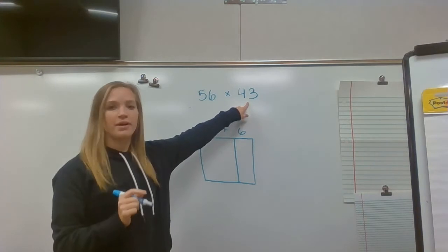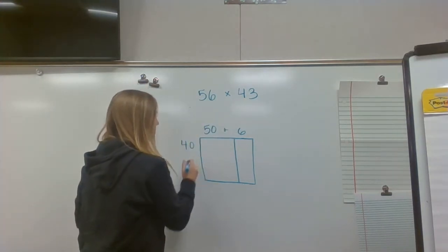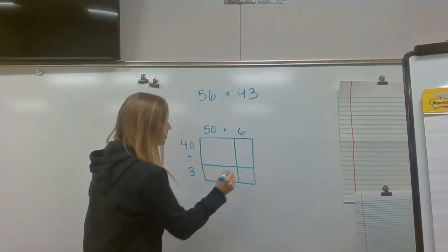Now, I need to find my expanded form for 43, which will be 40 plus 3. And I can make this side a little bit smaller, too.